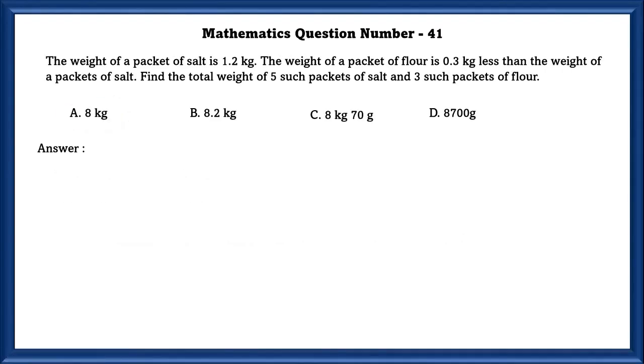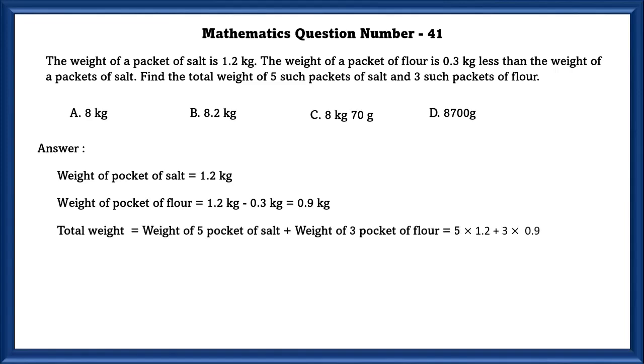Mathematics question number 41. The weight of packet of salt is 1.2 kgs. The weight of packet of flour is 0.3 kgs less than the weight of a packet of salt. Find the total weight of five such packets of salt and three such packets of flour. Weight of packet of flour is equal to 1.2 kg minus 0.3 kg, which is equal to 0.9 kgs. So total weight is equal to weight of five packets of salt plus weight of three packets of flour, which is equal to 8700 gram or 8.7 kgs.